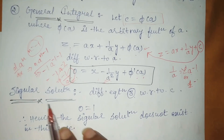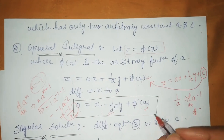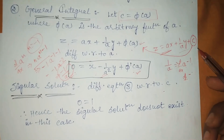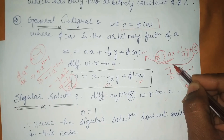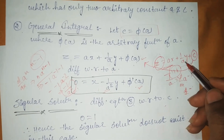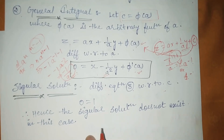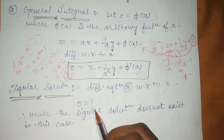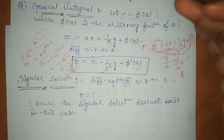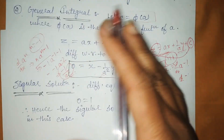To find the singular solution, we take the equation (with C written, before replacing with φ(A)) and differentiate with respect to C. On the LHS there is no C term — Z gives 0 when differentiated. On the RHS, the C term differentiates to give 1. Since 0 ≠ 1, the singular solution does not exist in this case. The format is: eliminate all arbitrary constants A, B, C, keeping only one arbitrary element — here only A remains.